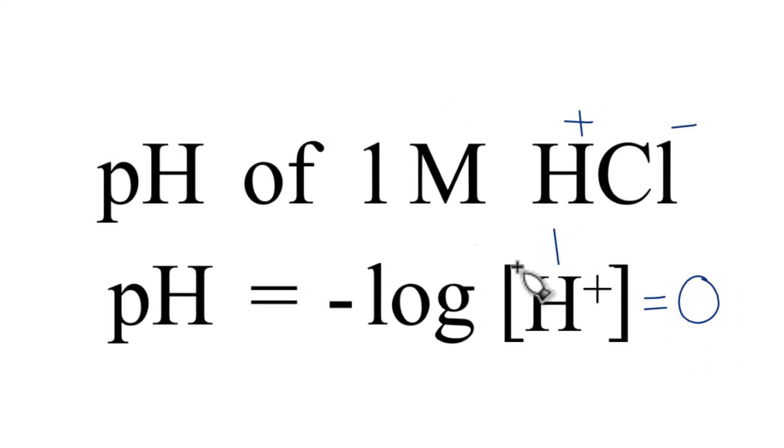So the pH of a 1 molar solution of HCl is zero. That's pretty low, but a 12 molar solution would be even lower - it would be a negative number. We can have a pH that is zero, and we do expect this to be lower than 7 since it's an acid.